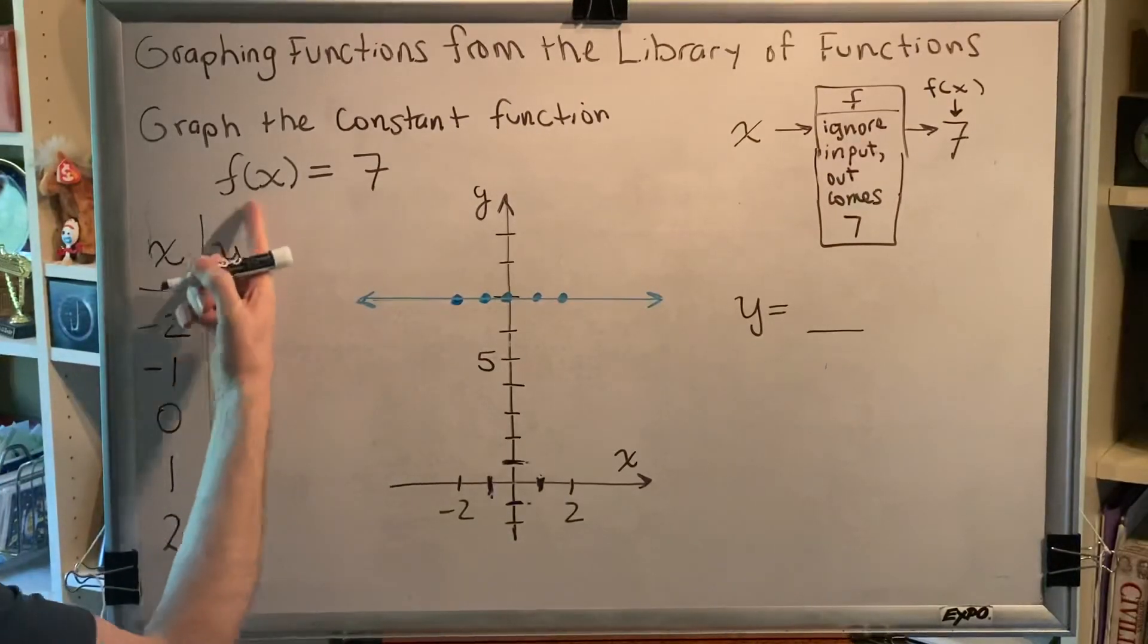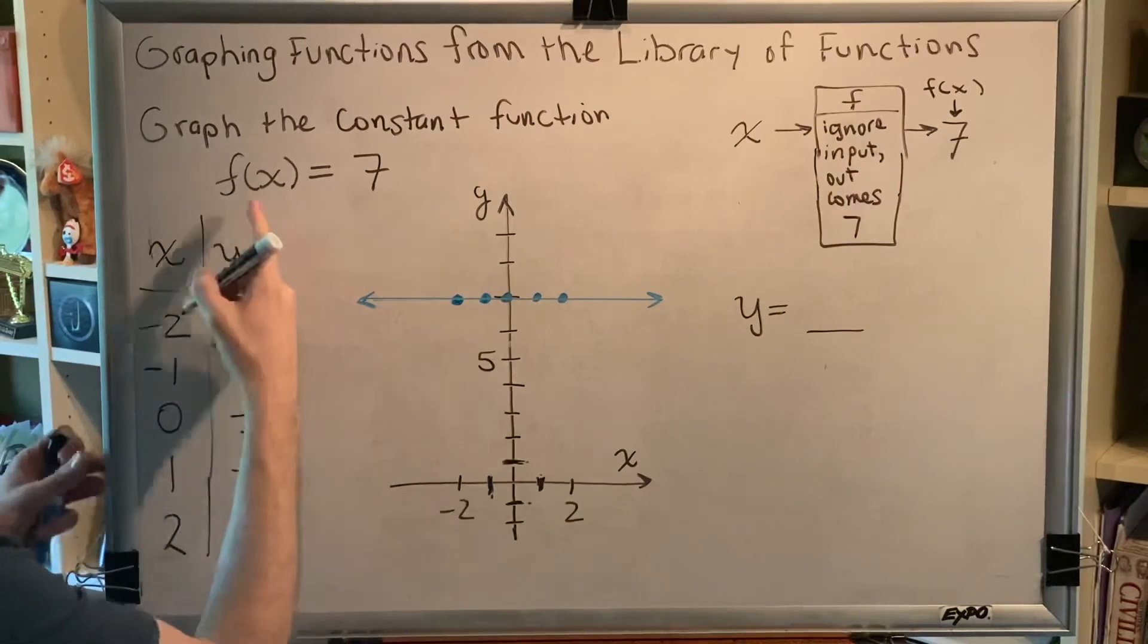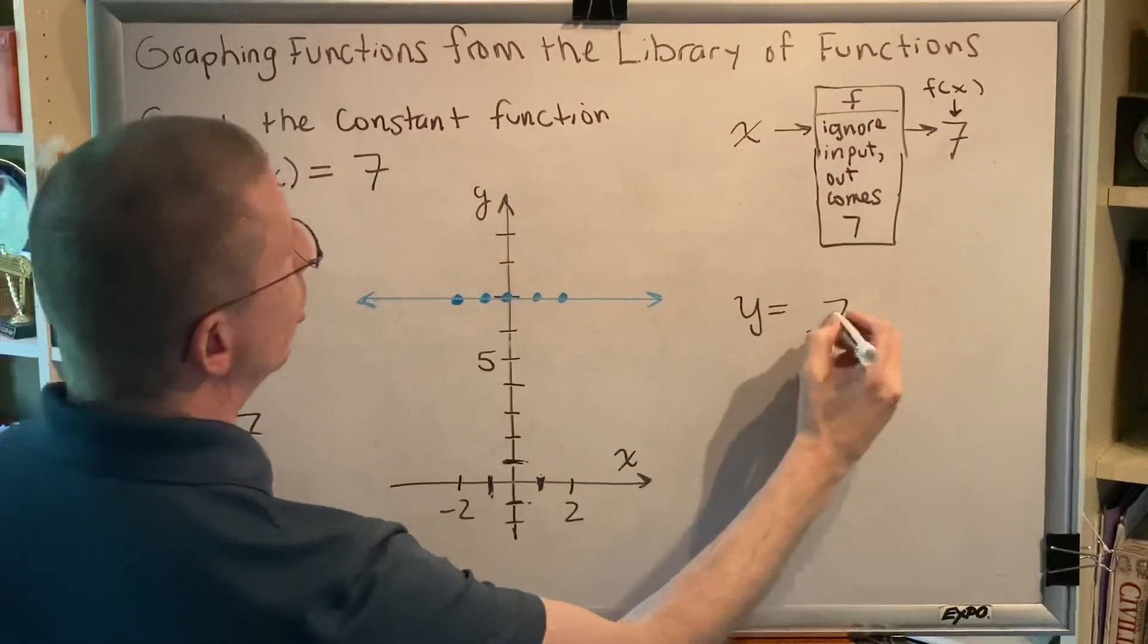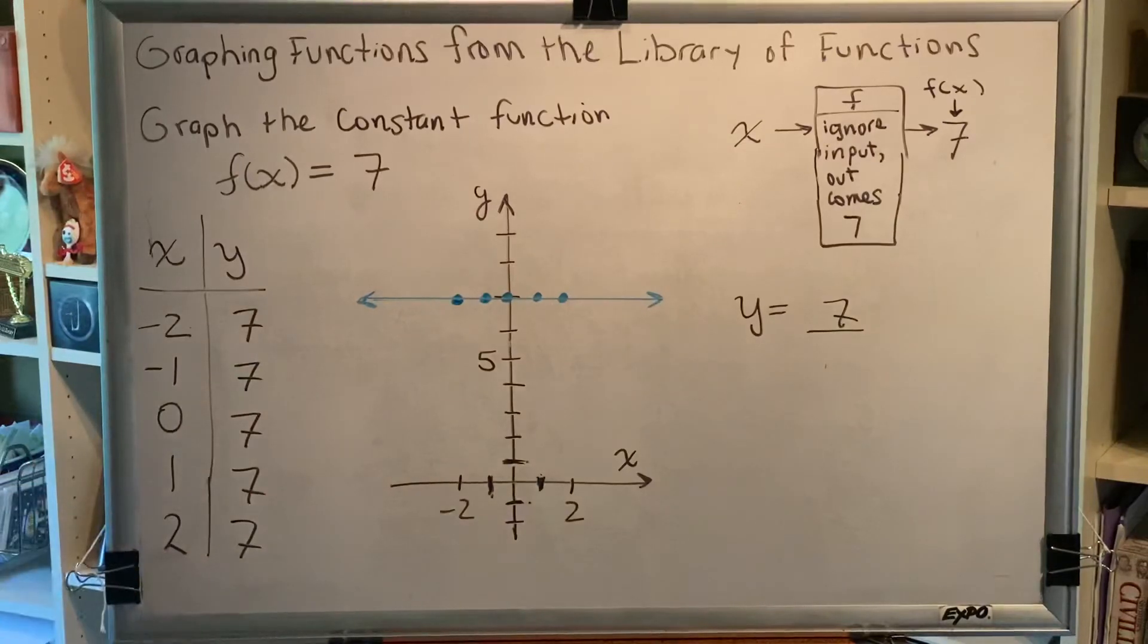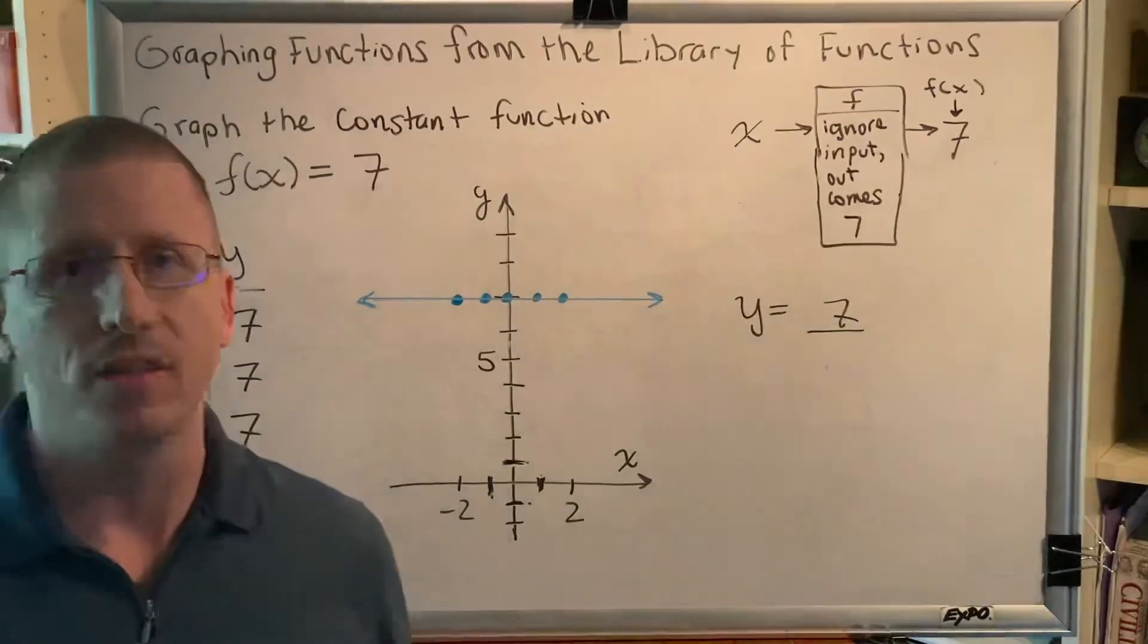We do. f(x) is the same as y. So this is like saying y = 7. So we get the horizontal line at a height of 7. This is how you graph the constant function.